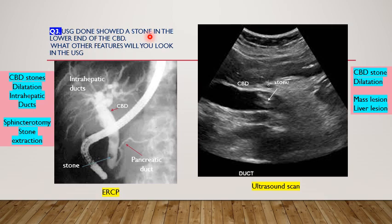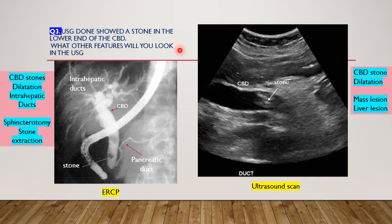Question three: ultrasound done showed a stone in the lower end of the CBD. What other features will you look for in this ultrasound? This ultrasound picture shows a stone in the CBD with a dilated common bile duct. The common bile duct is usually less than 6 mm in diameter, and anything wider than that is considered dilated. It can also show the extent of dilatation, whether it extends into the liver and intrahepatic ducts, suggesting long-standing obstruction. It can also show signs of a tumour mass in the head of the pancreas causing obstruction, an enlarged pancreas if it is pancreatitis, and lesions in the liver.